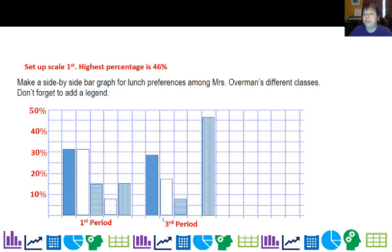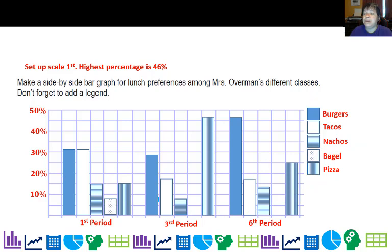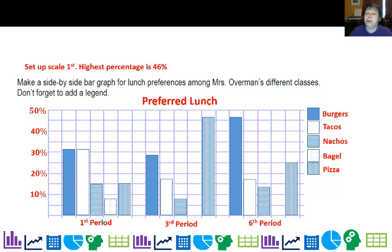Then I'm going to add in third period and sixth period. It's always good to add a legend — and don't forget your title, which is 'Preferred Lunch.' So this is a side-by-side bar graph: you've got a bar graph here and a bar graph there and a bar graph there, side by side.